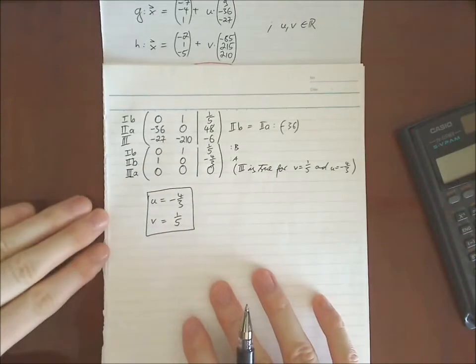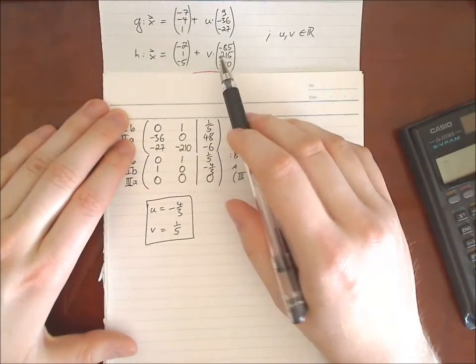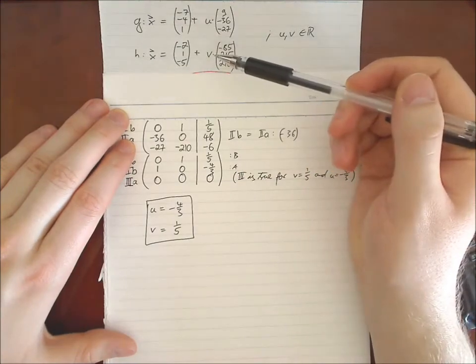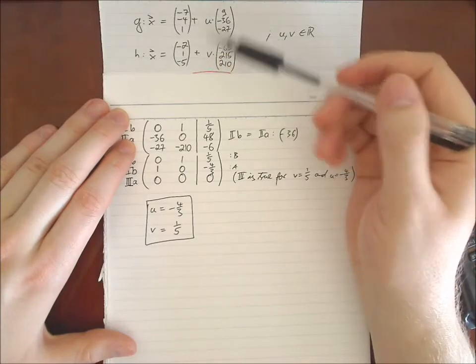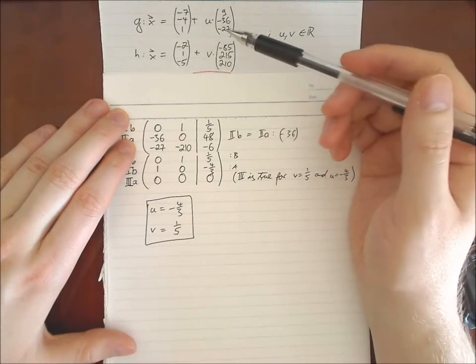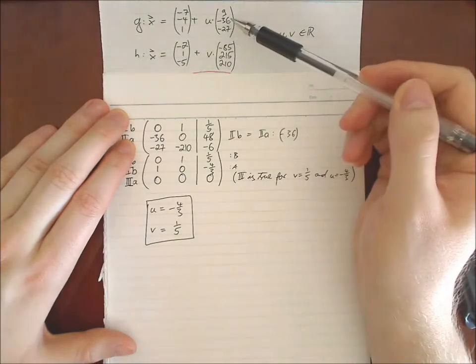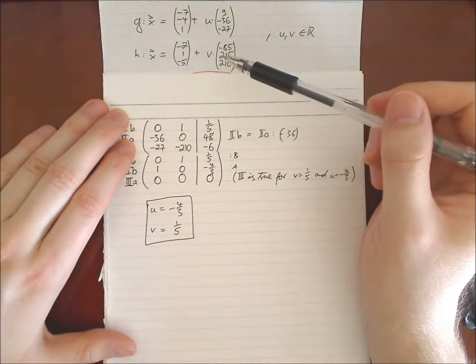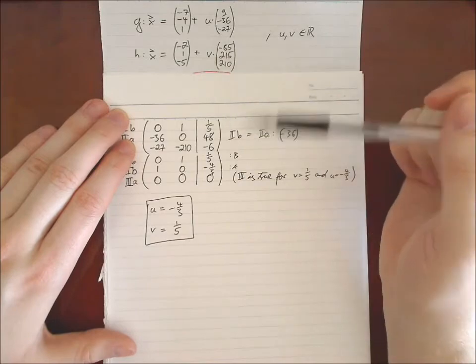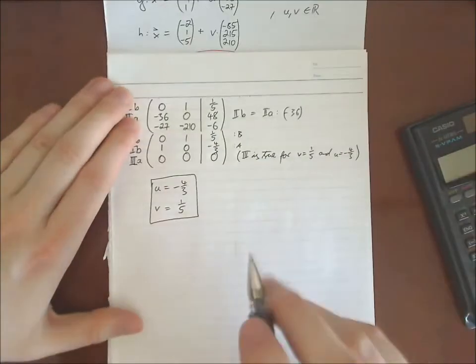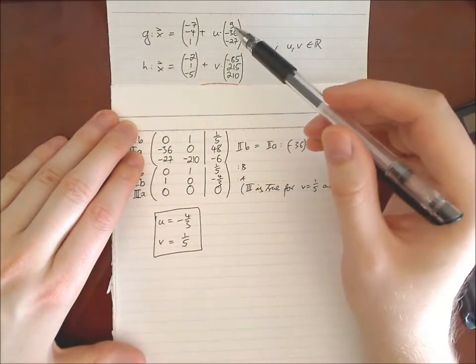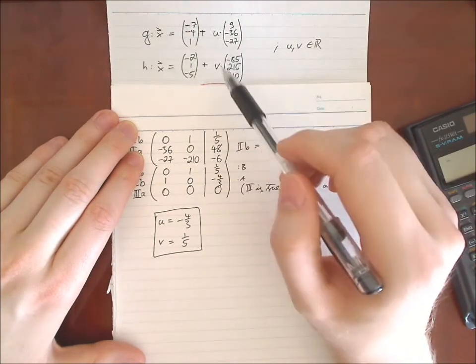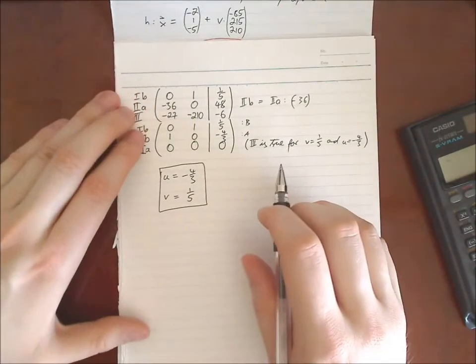So we need our definitions of the straight lines again. And in this case, you could now calculate. You could take g, insert u. Or you could also take h and insert v. And you should end up with the same point. In an exam, I think it's sufficient. You just calculate one straight line. You end up with a point. If you have time, you can also calculate the other straight line as a proof. Just to make sure that you really end up with the right intersection point. But it's not necessary to calculate both. Because if you have done everything correctly, it is completely sufficient to insert u in g or v in h. Not both. It's not necessary to calculate both.